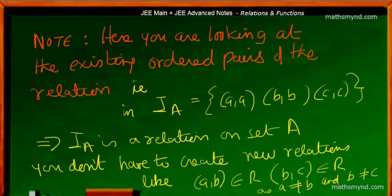What I mean is that we are not looking at (a,b) forming a relation and (b,c) also forming a relation, because in this case all three elements a, b, and c are distinct elements — naturally a is not equal to b and b is not equal to c. That property cannot be applied when the first element of the ordered pair is equal to the second, since I am referring to the identity relation itself and not creating any other ordered pair to form a new kind of relation.